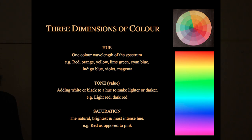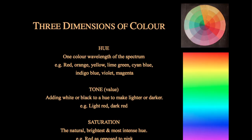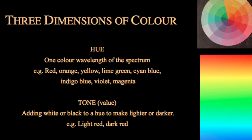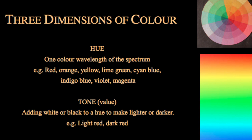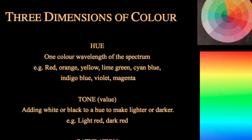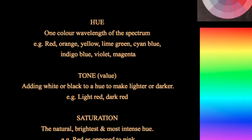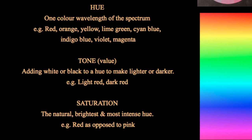I would like to suggest that there's a third dimension to color. We talked about hue — one color wavelength of the spectrum, like red, orange, yellow, green, blue. We talked about tone or value — adding white or black makes it darker or lighter, so a light red versus a dark red differ in tone while remaining the same hue. The last dimension is saturation. In the visionary state, if you've witnessed certain visions, you will notice that the brightness of colors is extraordinary, and they tend to be very highly saturated. Saturation is the natural, brightest, most intense hue — a pure red as opposed to a pink.